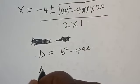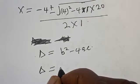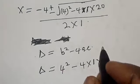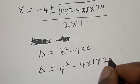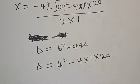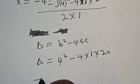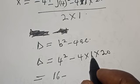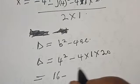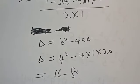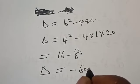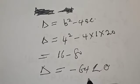Our discriminant is B squared minus 4AC. That is 4 squared minus 4 times 1 times 20, which equals 16 minus 80, giving us minus 64. Since the discriminant is minus 64, which is less than 0, we reject this case — there are no real solutions from this quadratic.